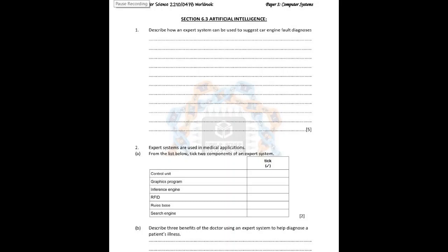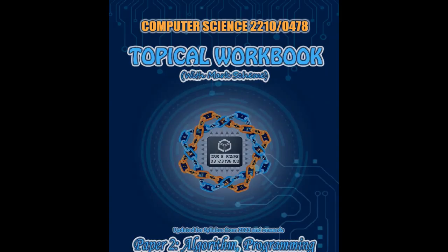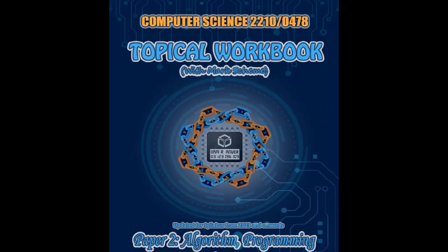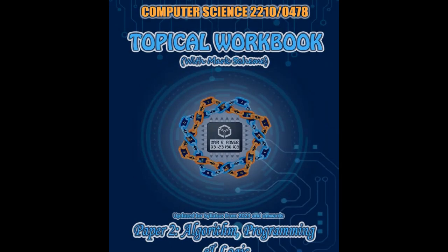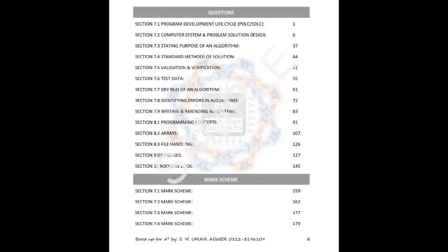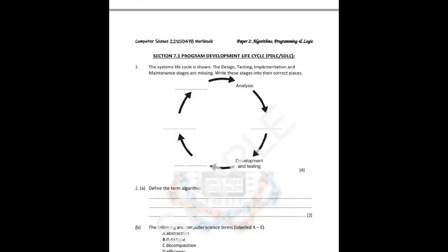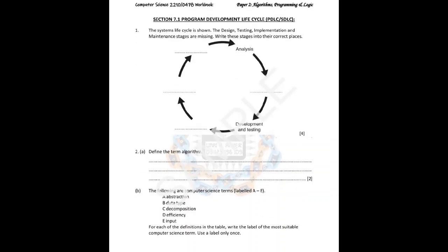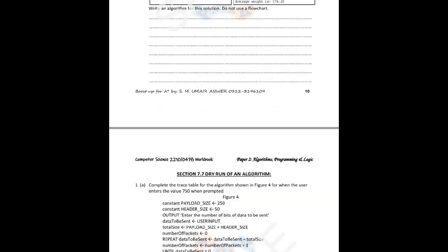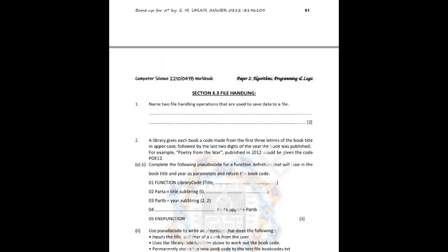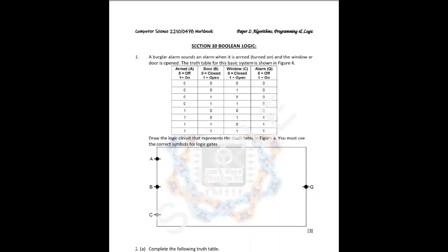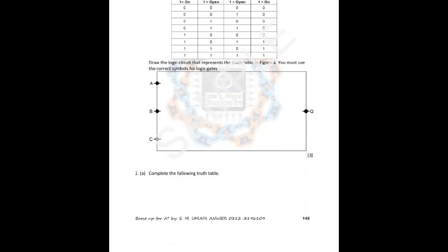A must buy if you want to boost your grade. Similar to the paper one workbook, I have designed a workbook for paper two as well — for algorithm, programming, and logic for CIE 2210 or 0478, GCE or IGCSE computer science. It contains questions on every subsection of the syllabus content for paper two along with the mark scheme. These are some pages from the workbook showing sections 7.1, 7.7, 8.3, and section 10 boolean logic.